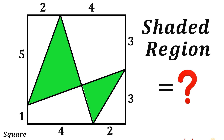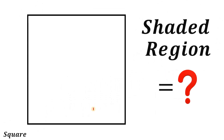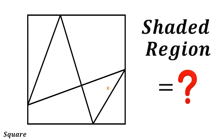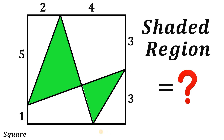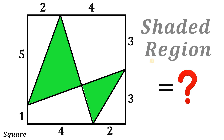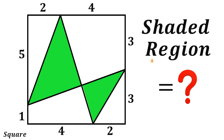Can you solve this geometry challenge? Here's the question. Given the square, let's draw a segment like this, and let's color this triangle green. This segment measures one, this part measures five, this part is two, this part is four, this part is three, this part is three, this part is two, and this part is four. The question is: what is the area of the shaded region?